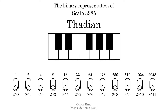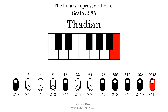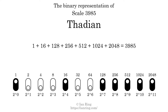The binary representation of this scale is determined by mapping tones of the scale to binary digits. Each binary digit represents a power of 2. To get the scale number, we add the powers of 2 together. The powers of 2 that are present in the scale, all added together, equals 3985. That is why the scale number, in decimal, is 3985. The scale number not only enumerates the scale with a unique index, but it also literally describes the tonal content of the scale.